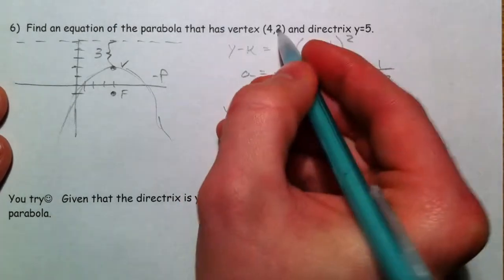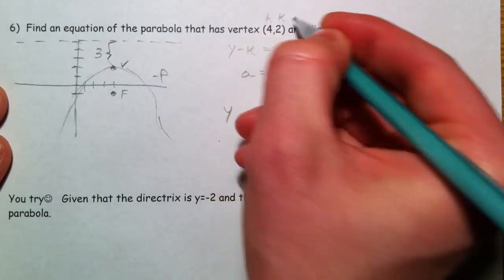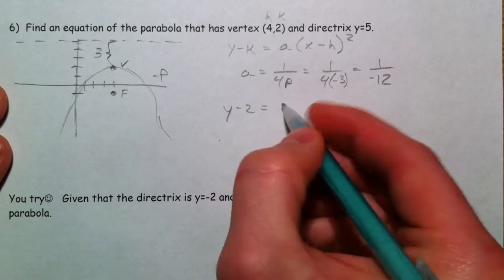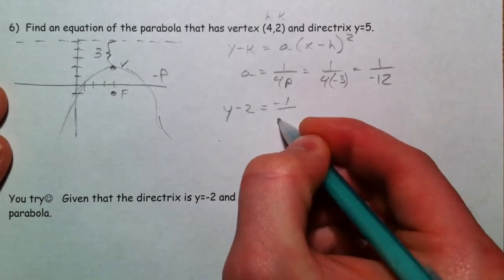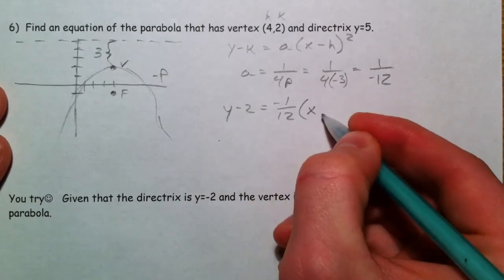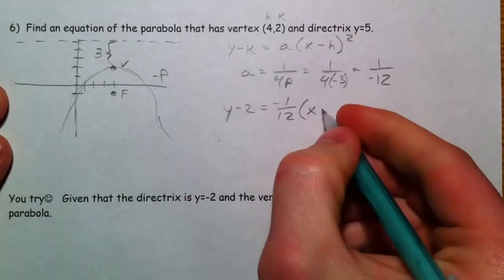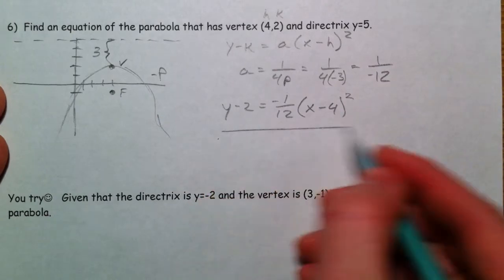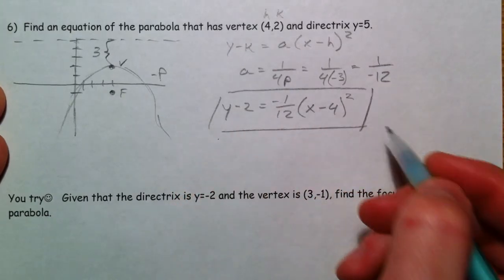So y minus our vertex, this is our h and our k. So y minus the y coordinate of the vertex, negative 1 twelfth, x minus the x coordinate of 4. And this one's got to be squared. And there's your equation.